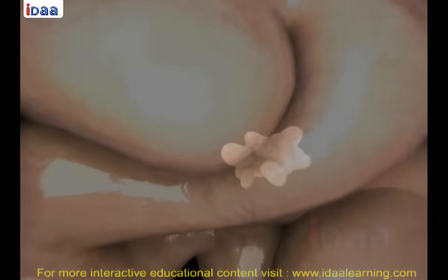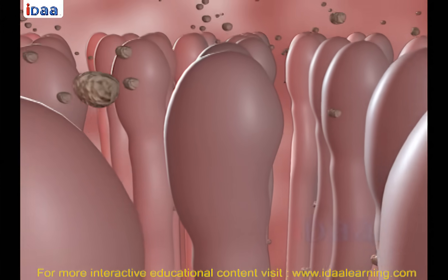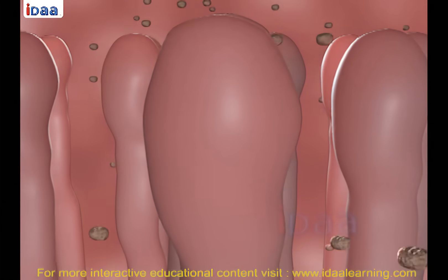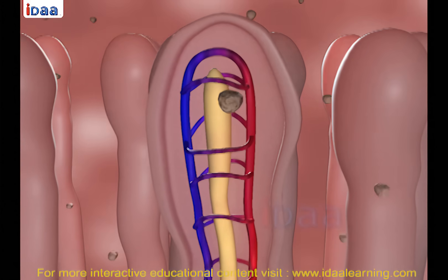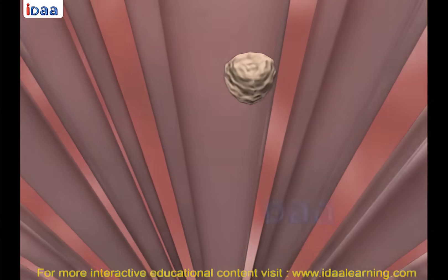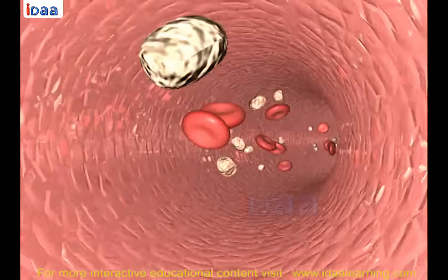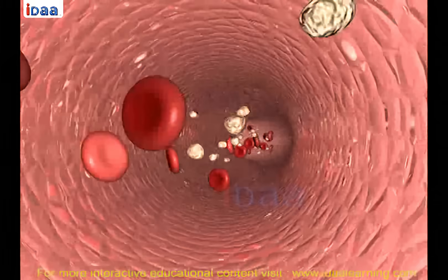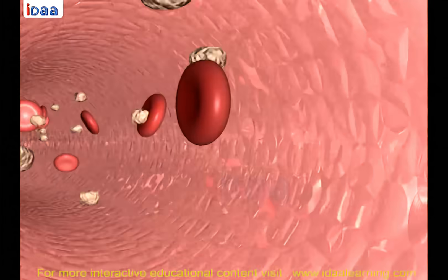The inner wall of the small intestine has finger-like projections called villi, which have a network of thin blood vessels close to the surface. The villi increase the surface area of absorption and absorb the digested food materials. The absorbed substances are transported through the bloodstream to different organs in the body and are used to build complex substances like proteins. This process is called assimilation. In the cells, glucose breaks down into carbon dioxide and water with the help of oxygen, releasing energy.